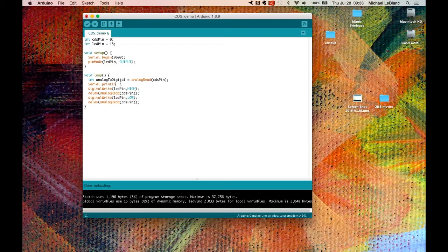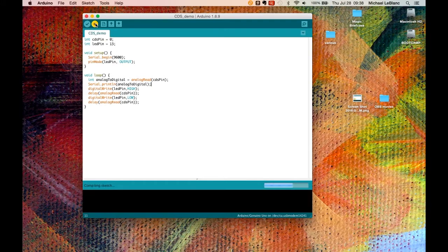To do a serial print line analog to digital so here we've set up the serial port we've created an integer within the loop and we're calling it analog to digital and we're reading the cadmium sulfide pin A0 then we'll print it out using the serial port serial monitor here and then we'll do the rest of our tricks so we'll still flash the light at various rates let's see if that verifies okay seems to be working